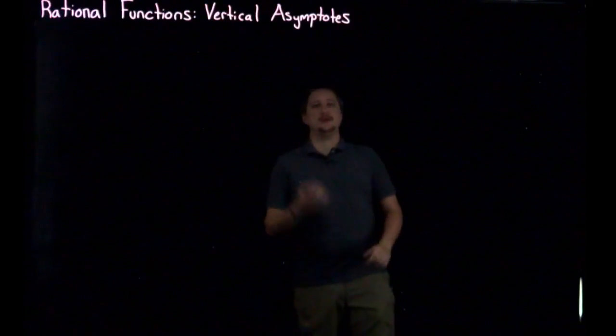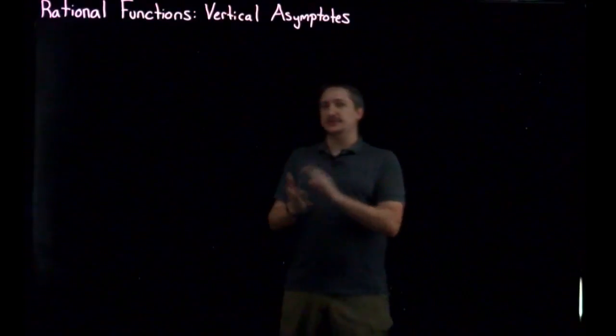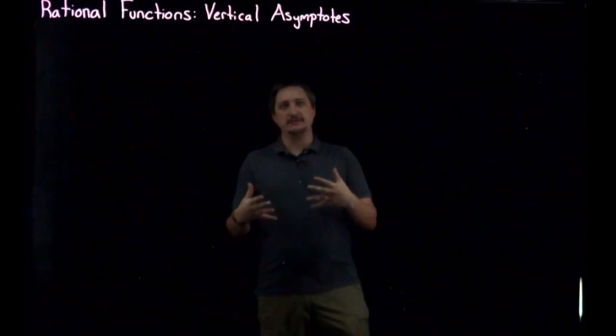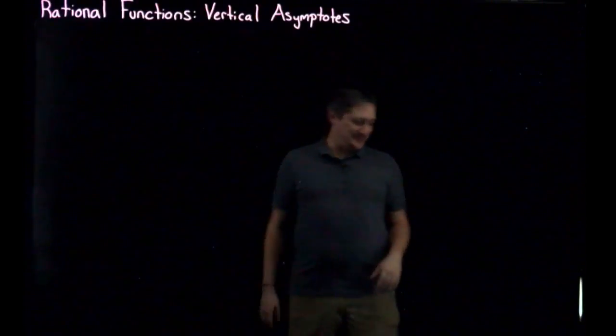Hello. So, in this video, we're going to be talking about rational functions, and in particular, the vertical asymptotes, and how to tell if a function has a vertical asymptote.